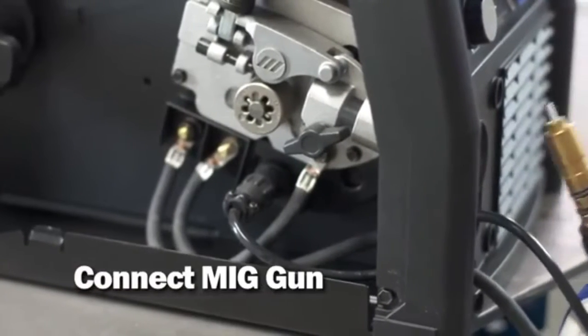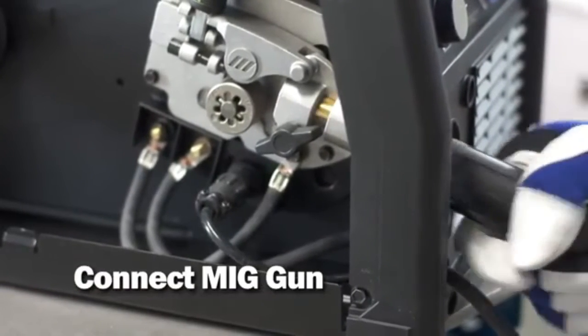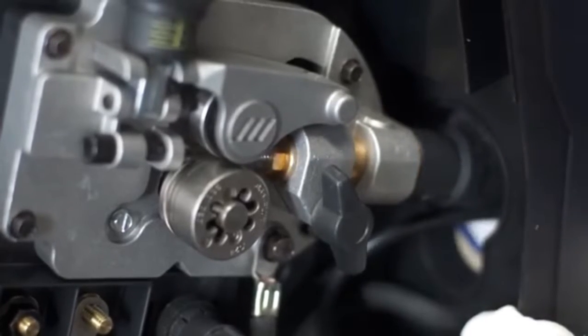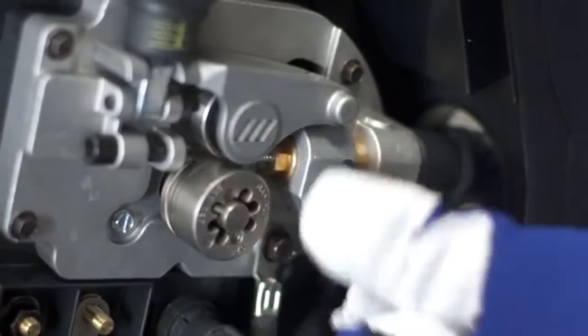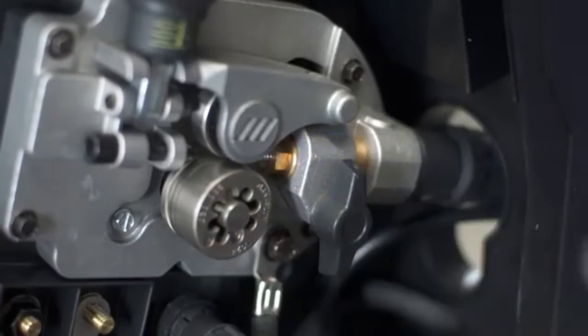Next, insert the MIG gun into the drive casting, making sure it's completely seated into the drive assembly. Tighten the gun connection to the receptacle with the threaded T-knob.